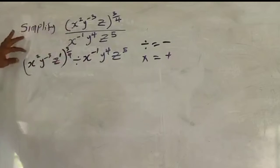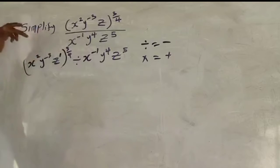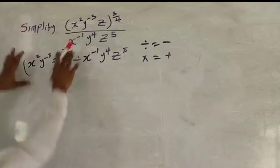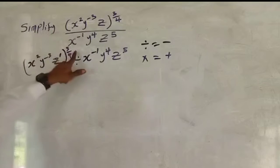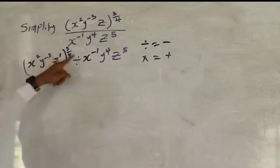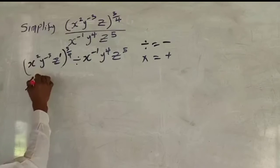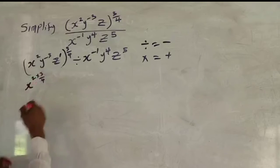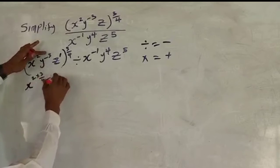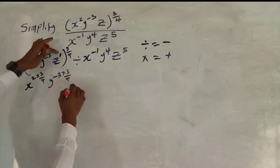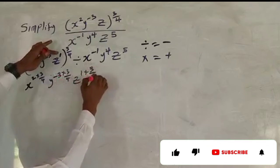Now let's open this bracket using the power-of-index rule: when you have a bracket raised to a power, you multiply each index inside by that outer power. So we get s raised to power 2 times 3 over 4, y raised to power minus 3 times 3 over 4, and z raised to power 1 times 3 over 4.